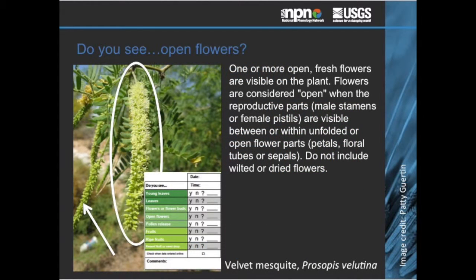Here you see an example of one phenophase, or life cycle event, from the species protocols developed for a semi-deciduous desert species, the velvet mesquite. Each of the 1,016 species in the database has a suite of 8 to 10 phenophase definitions for each phase it exhibits through time. Observers go into the field armed with specific information about the plants and animals they are observing, plus phenophase definitions, and submit yes or no answers about whether they see the phases occurring at the time of their visitation. Observers must be familiar with the plant, able to identify it, and familiar with the botany including leaves, flowers, and fruits, to ensure no misidentification.